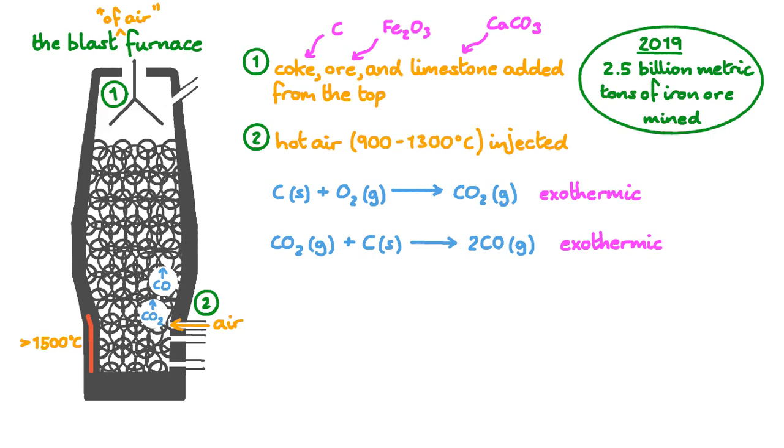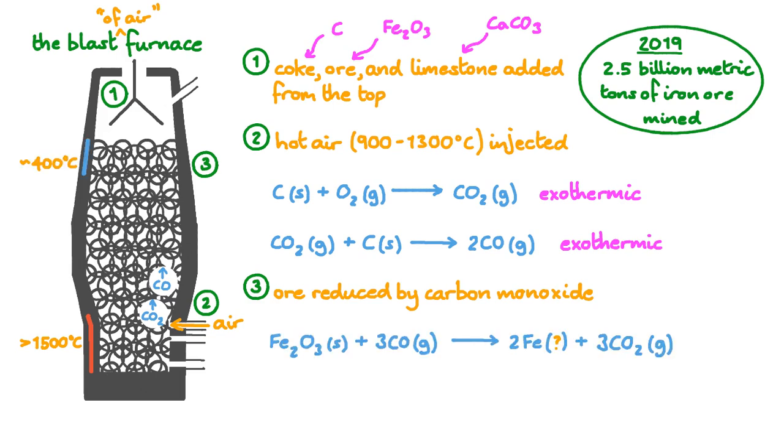As carbon dioxide rises and mixes with more carbon, it reacts to produce carbon monoxide. This is also an exothermic reaction. The carbon monoxide rises up the furnace to do the most important job, reducing our iron oxide. The carbon monoxide reacts with the iron ore from the top and as it falls down the blast furnace. Iron-3 oxide will react with carbon monoxide to produce iron and carbon dioxide.